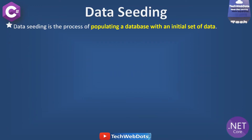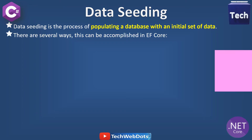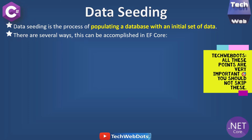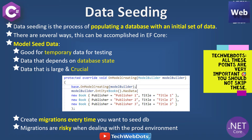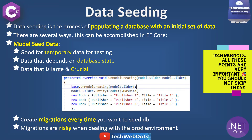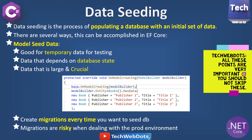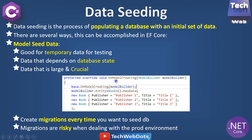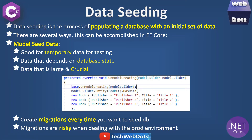What is data seeding? Data seeding is a process of populating a database with an initial set of data. There are several ways this can be accomplished in Entity Framework Core with the help of model seed data, which is good for temporary data for testing and also data that depends on database state. Model seed data is important and very useful in those cases.